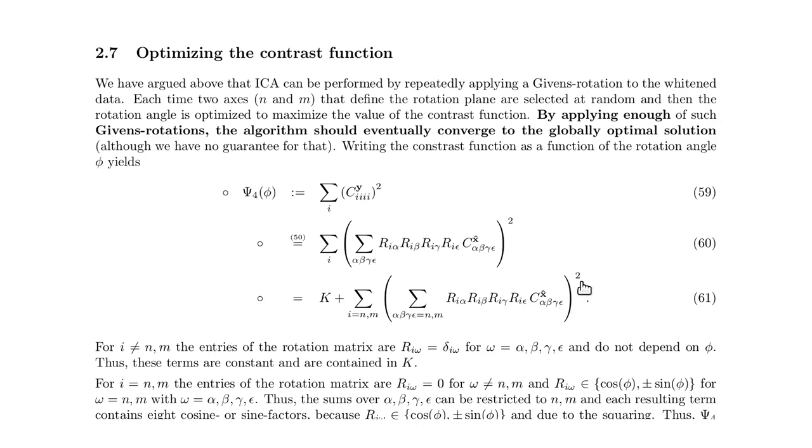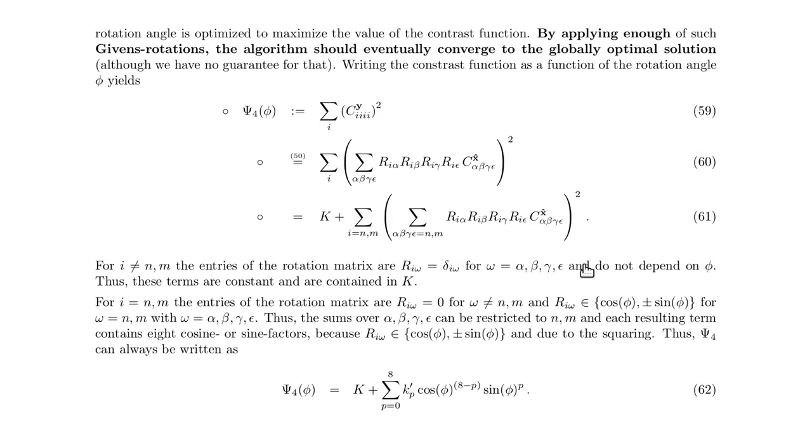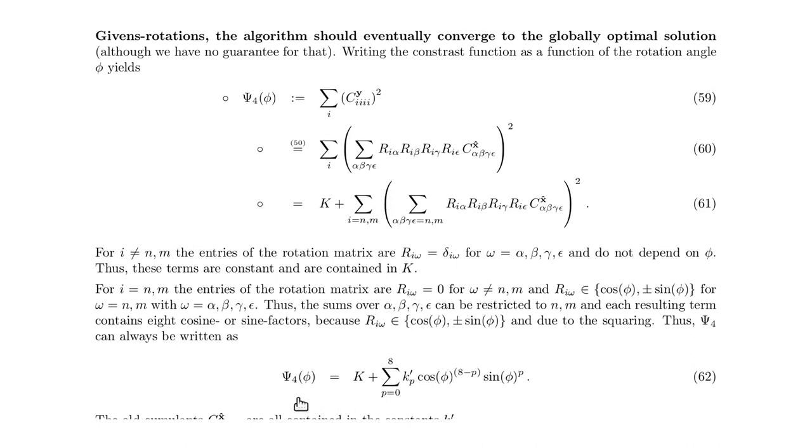And together with the squaring, we realize that any term that results from this has eight cosine and sine values. So we can write the objective function in this form shown here below.